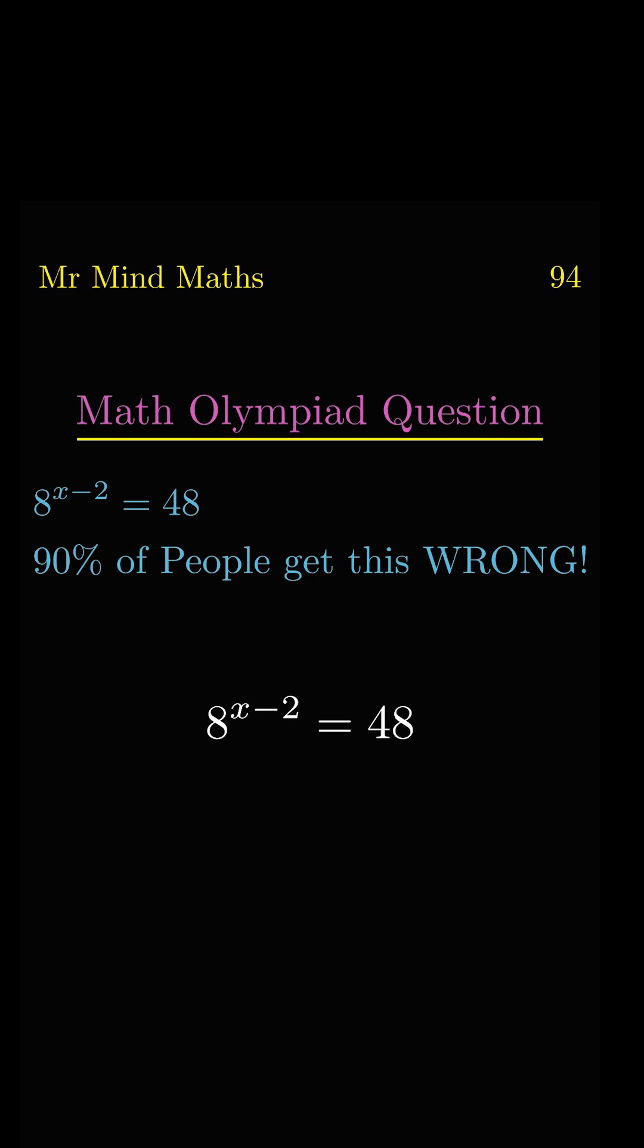First we will separate the basis of x minus 2. Now we will shift 8 power minus 2 to the denominator to make 8 power positive. So 8 power 2 equals 64.